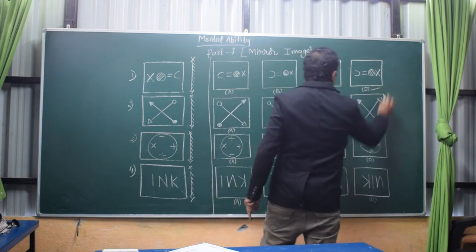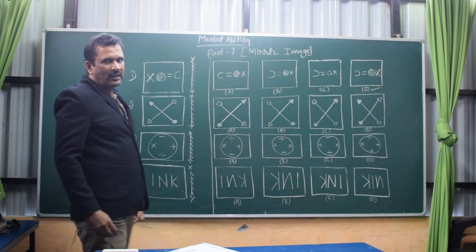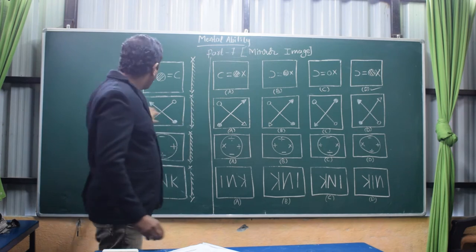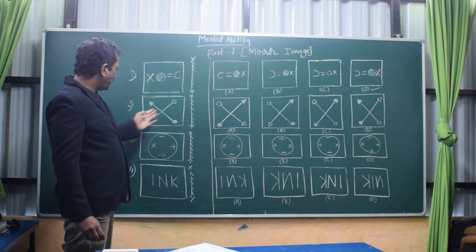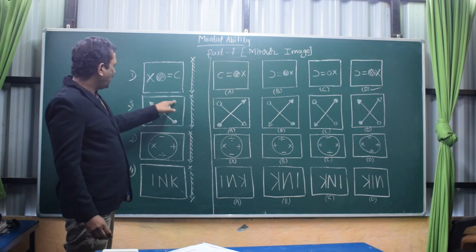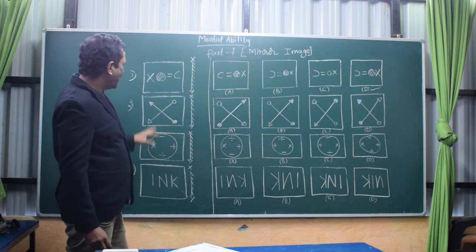This is quite similar to the question figure, so D is the answer. Very simple. When you practice with the mirror it will become easy. Go to the second question. Here two oval marks are there. One is shaded and one is without shading.